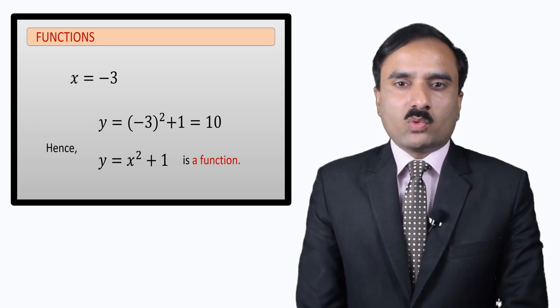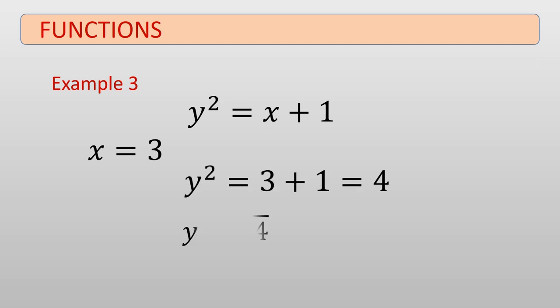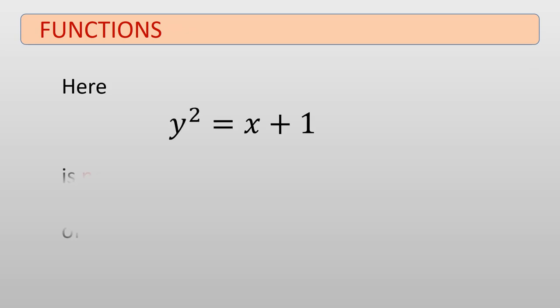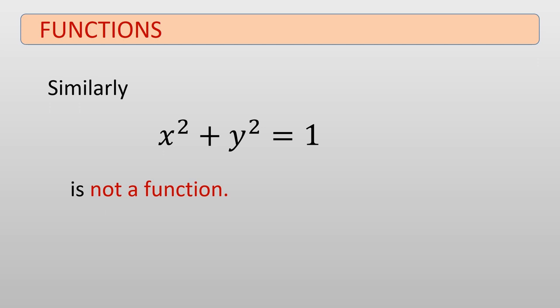Now we take a look at some equations which are not functions. Consider y squared equals x plus 1. On substituting x equals 3 we get y squared equals 4, which simplifies to y equals positive 2 or negative 2. We got two different values of y for a single value of x, so this is not a function. Similarly, x squared plus y squared equals 1 is not a function, as it leads to two different values of y for a single value of x.